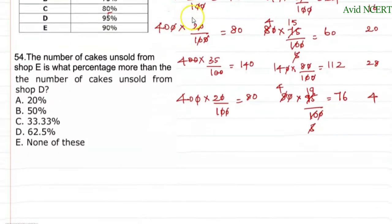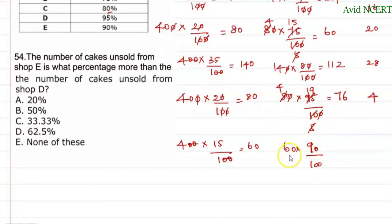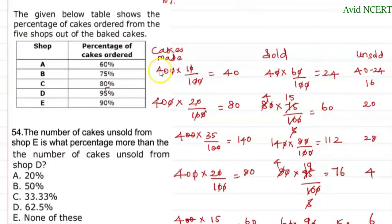For shop E: 400 × 15/100 = 60 cakes made. The percentage of cakes sold is 90%, so cakes sold = 60 × 90/100 = 54. You can verify: 10% of 60 is 6, so 60 − 6 = 54. Unsold cakes = 60 − 54 = 6. We now have the unsold data for all five shops.